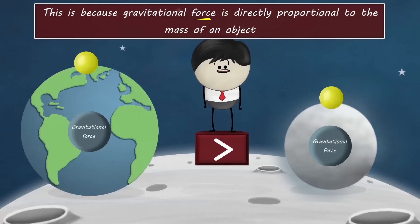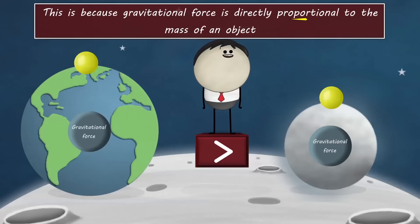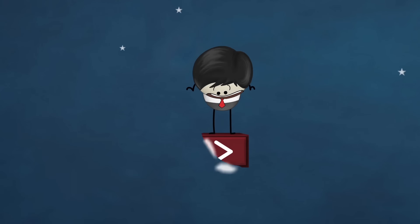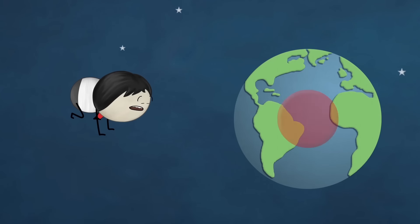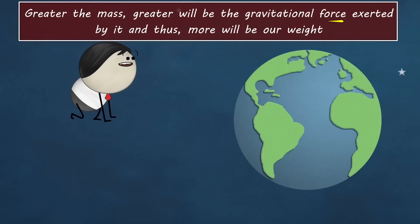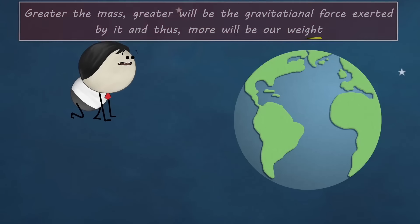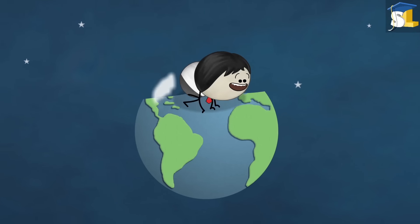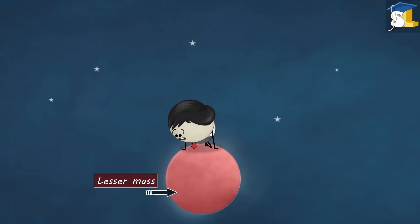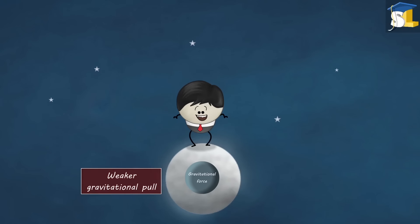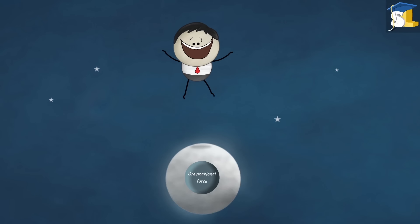Gravitational force is directly proportional to the mass of an object. Greater the mass, greater will be the gravitational force exerted by it and thus more will be our weight. As the moon has lesser mass than the earth, it has a weaker gravitational pull and hence we weigh less on the moon.